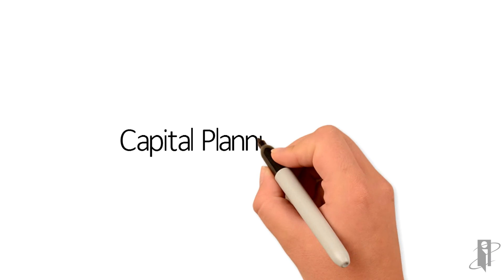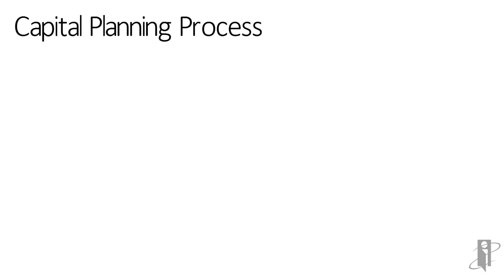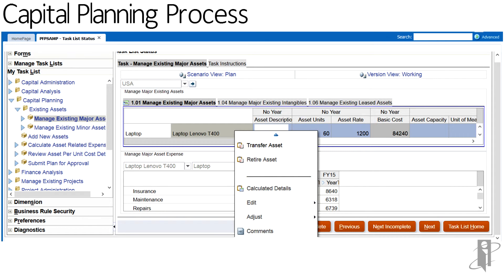PFP includes the capital planning module. You can tie in your assets to your projects and manage how expenses are pulled in by project. You have full functionality to manage and forecast your assets: loading in actuals for existing assets, transferring them, retiring assets, and calculating the appropriate expenses based on those changes. You can add and request new assets and approve those, and because this is within PFP, you can tie that directly into projects.